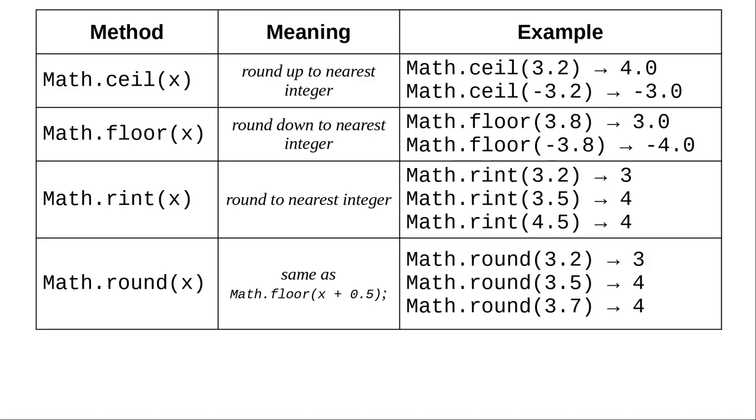Here are methods for rounding. Ceiling rounds up to the nearest integer. Floor rounds down to the nearest integer. Notice their behavior with negative numbers.